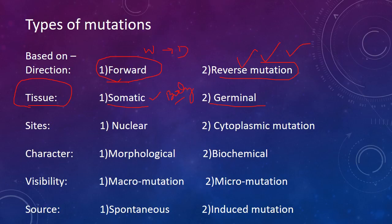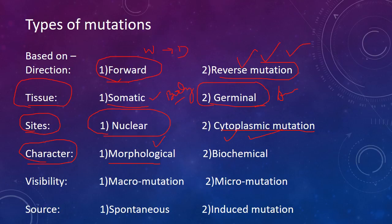Germinal mutation is always concerned with reproduction and occurs at the level of anther, stigma, pore, and grains. Cytoplasmic mutation occurs at the extra-nuclear level; nuclear mutation is the contrast. Morphological mutation produces morphological changes; biochemical mutation alters enzymes. Based on source, mutations are spontaneous (natural) or induced (man-made) — spontaneous requires no extra mutagenic agent.